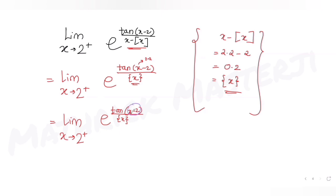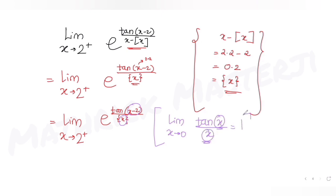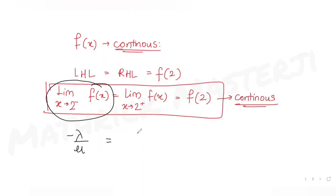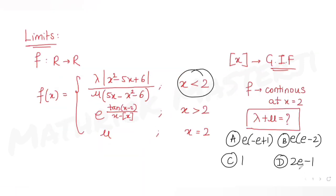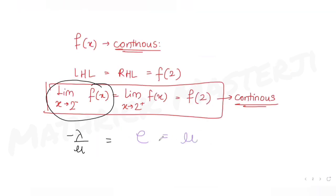Since tan(x−2) and (x−2) are the same expression in numerator and denominator, using the standard limit lim(θ→0) tan(θ)/θ = 1, the exponent equals 1. Therefore the right-hand limit = e¹ = e. Also, f(2) = μ as directly given.